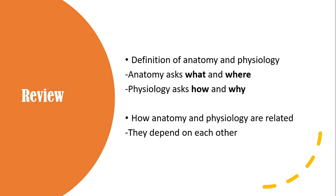A quick recap of what we just learned: Anatomy is the study of the structure and shape of the body and its parts — anatomy asks what and where. Physiology is the study of how the body and its parts work or function — physiology asks how and why. As for how anatomy and physiology are related, they depend on each other. Together, anatomy and physiology provide a solid understanding of how our body works.